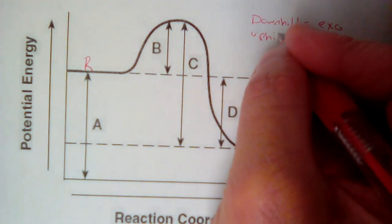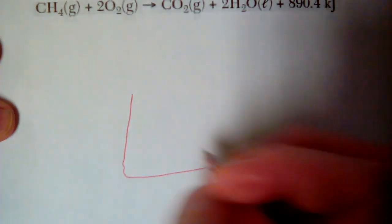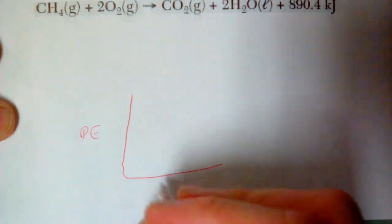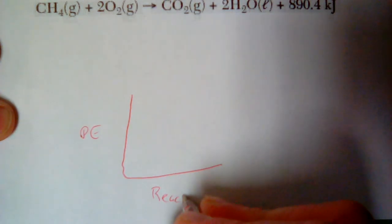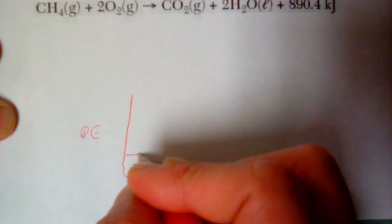If you're going uphill, it would be endo. Let me draw you a real quick example of what that would look like. You'd have your potential energy on your y. You'd have your reaction progression on your x. It would look like this.